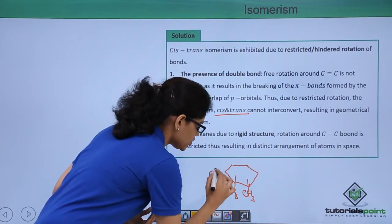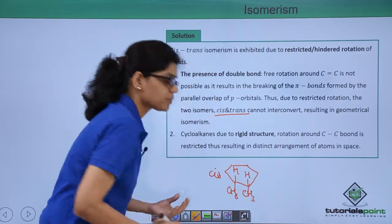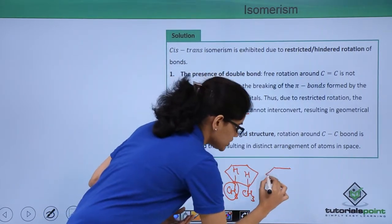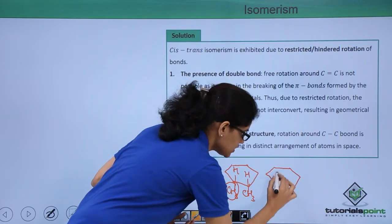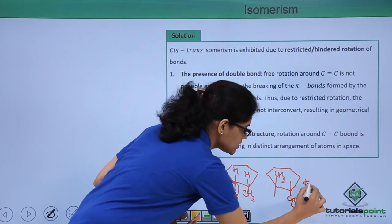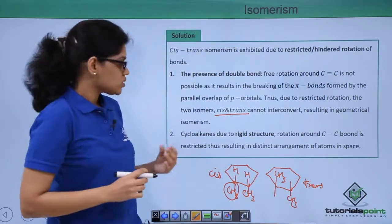In case where the methyl groups are opposite to each other as you can see here, if you have the methyl groups which are opposite to each other this will become your trans isomer.